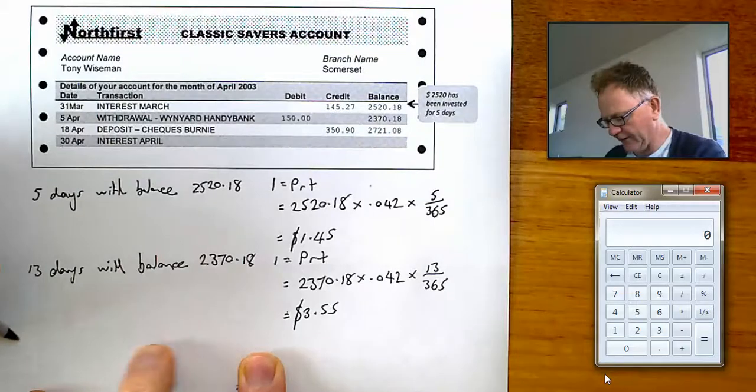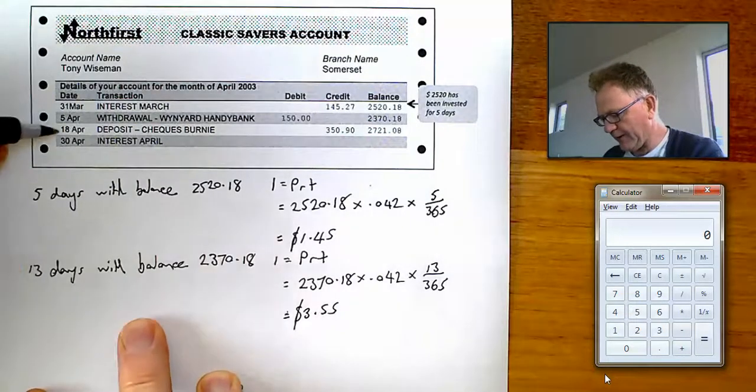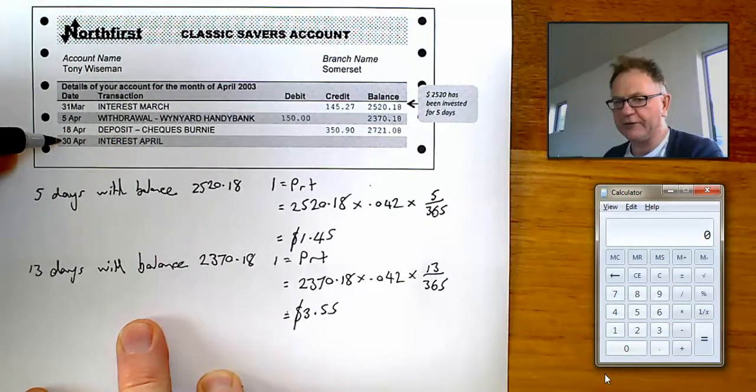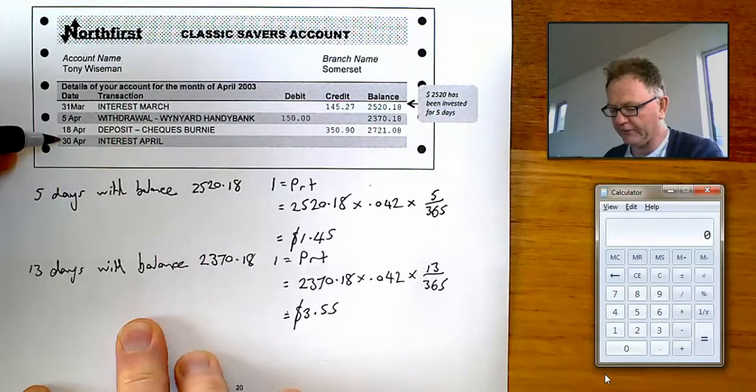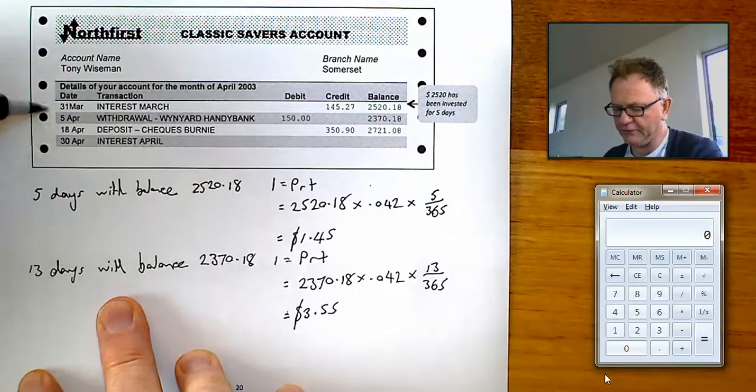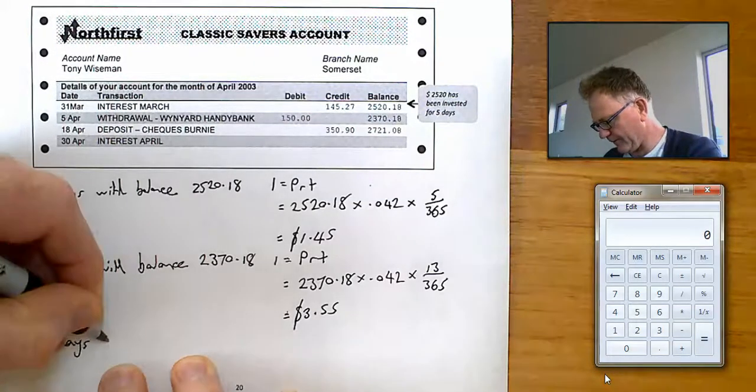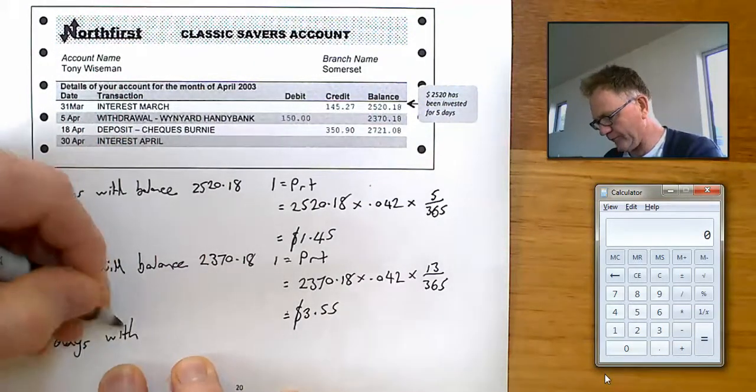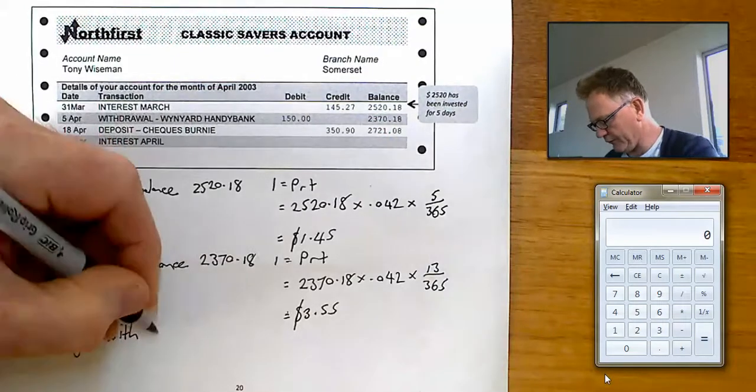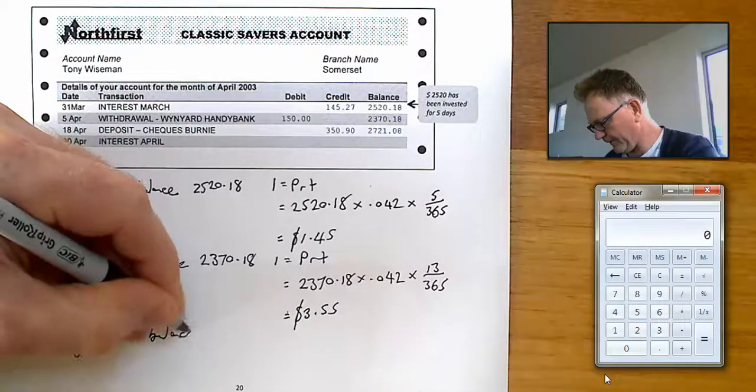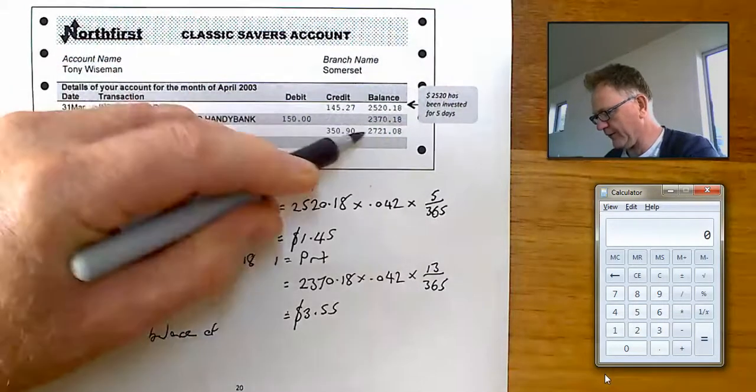And then finally, from April the 18th to April the 30th. Use your table of dates if you have to. All you calculated, but 30 minus 18 of course is 12 days. 12 days with a balance of this much.